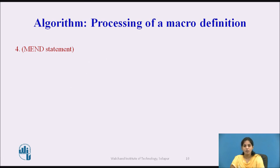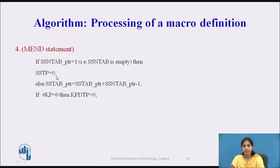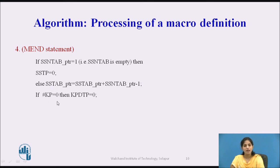For the MACRO END statement: if the SSN tab pointer equals 1, we assign the value 0 to the sequencing symbol table pointer; otherwise, the sequencing symbol pointer value is incremented by SSN tab pointer - 1. Next, if hash KP equals 0, we assign the value 0 to the keyword parameter default table pointer. This completes the algorithm of processing of the micro definition.